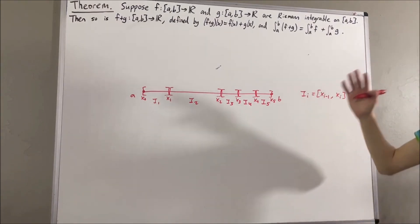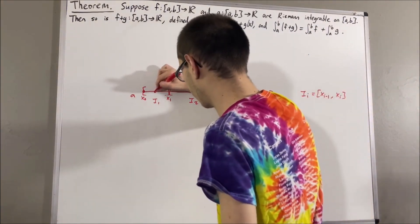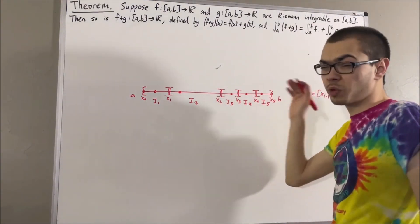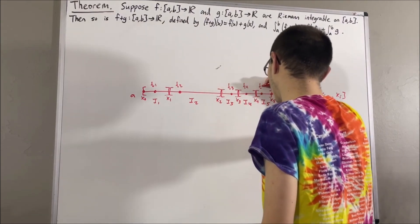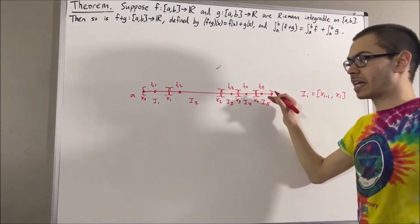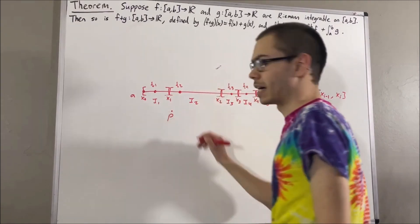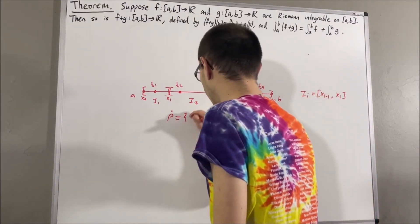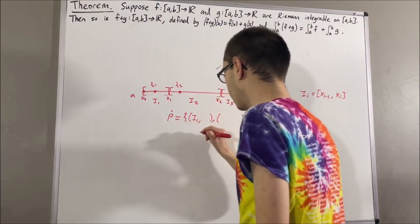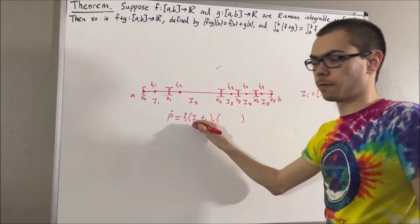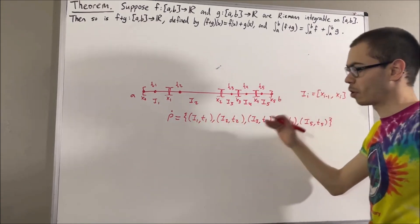A tagged partition is when we select a point from each of these sub-intervals. The points we select are called tags, and we might label them t1, t2, and so on. We symbolize a tagged partition by a letter with a dot on top, and it is a collection of ordered pairs where the first coordinate is the sub-interval and the second coordinate is the tag belonging to that sub-interval.